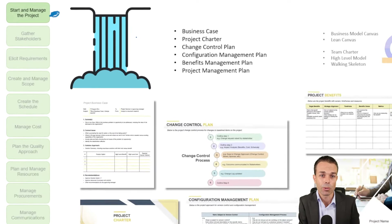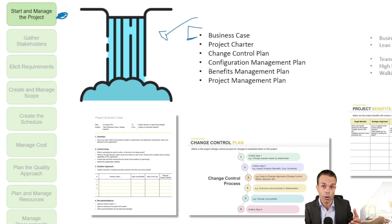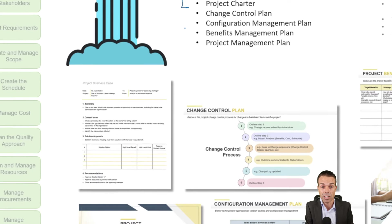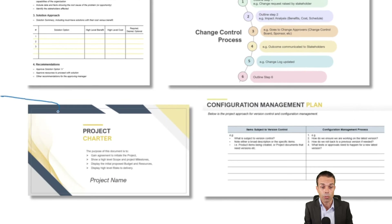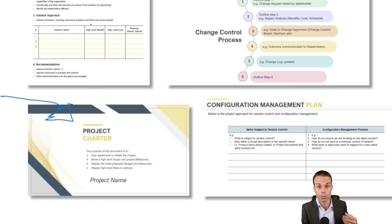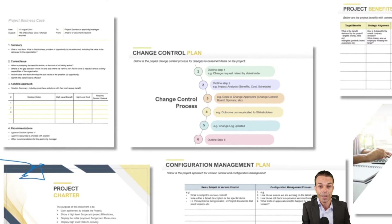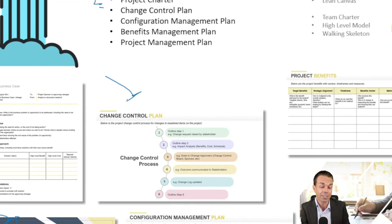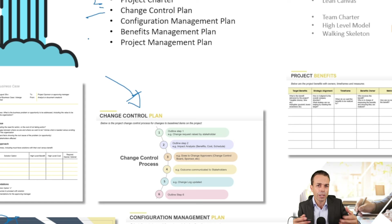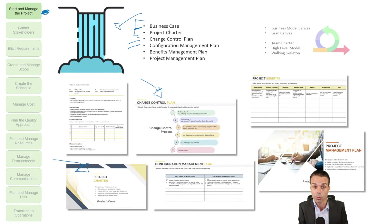We usually start with a business case where we figure out the pros and cons of starting or delivering this new product. We also start with a project charter to get the official kickoff from the project sponsor, so we get resources and funding. We might also have a change control plan where we outline our change control approach — usually changes have to go to a change control board. We outline all these things early on in a Waterfall project.